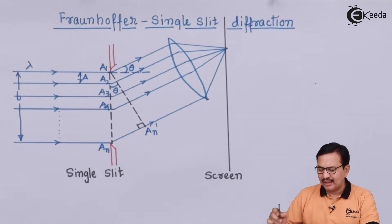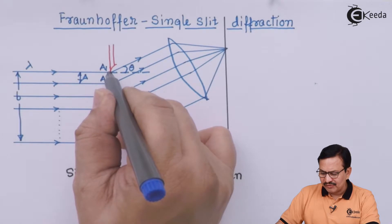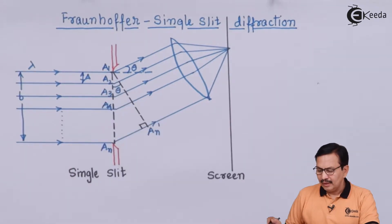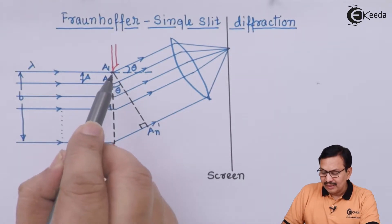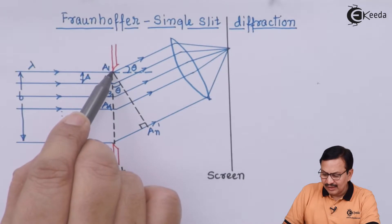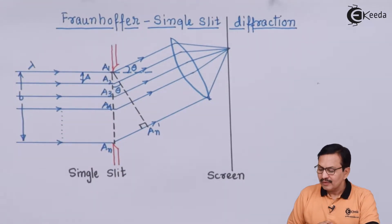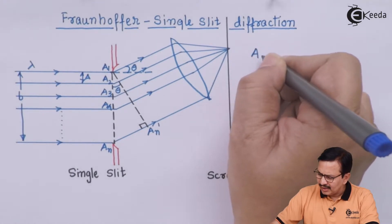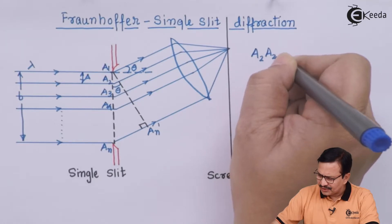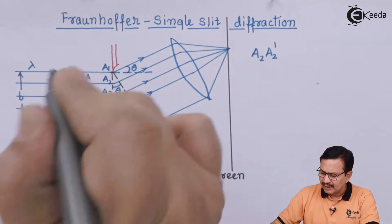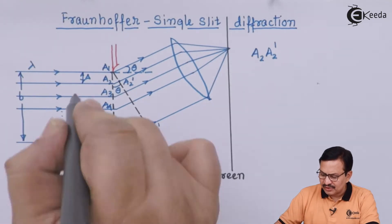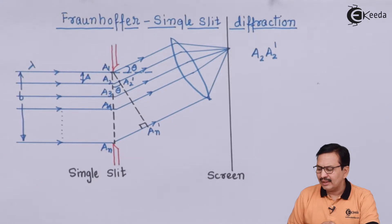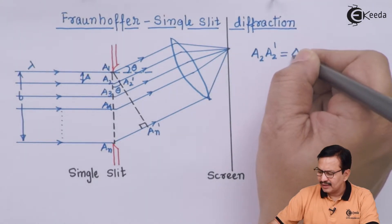I want to find out the path difference between the rays emerging from a1 and from a2. Let us call this path difference phi. We label a2 dash in our figure. By geometry, a2 to a2 dash involves distance delta and angle theta. So by geometry, a2 a2 dash is equal to delta times sine of theta.